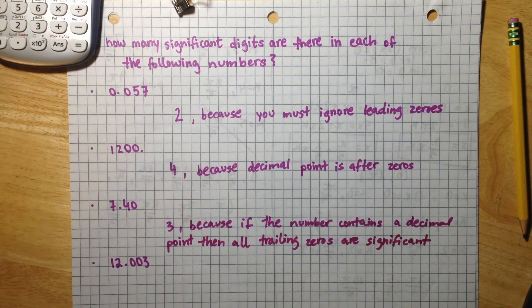And the last number we have is 12.003 and this number has five significant figures because the zeros are in between non-zero digits that are significant.